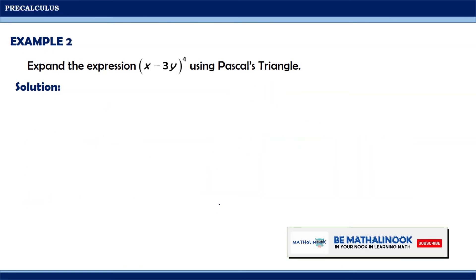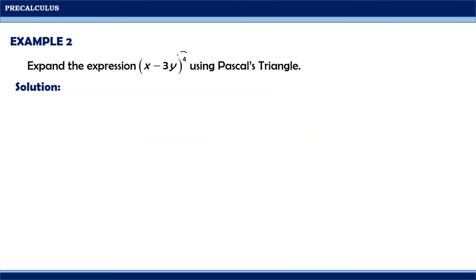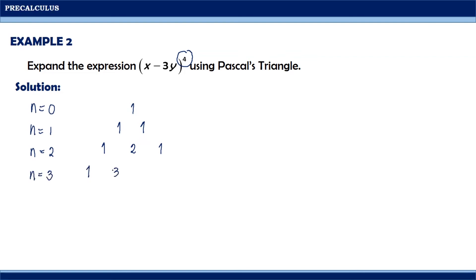Let us have another example: expand (x − 3y)⁴ using Pascal's Triangle. Since n = 4, we write the numerical coefficients row by row: n=0 gives 1; n=1 gives 1, 1; n=2 gives 1, 2, 1; n=3 gives 1, 3, 3, 1; and n=4 gives 1, 4, 6, 4, 1.